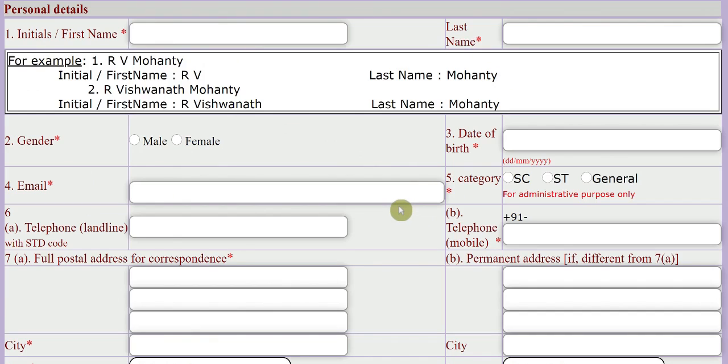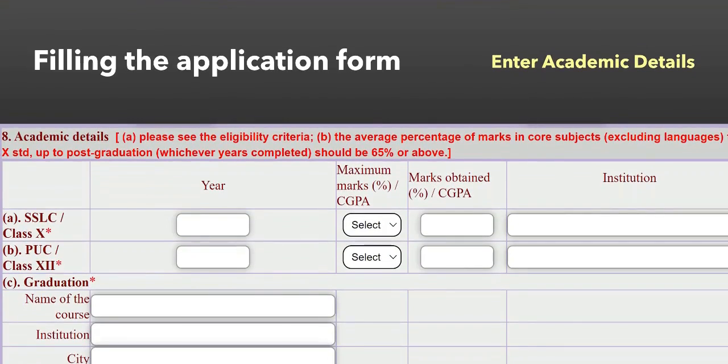From here, you can enter all the details here, starting from 10th standard onwards. Year of completion of your SSLC or 10th. You have to select the maximum mark or CGPA by selecting it here. And marks obtained either in percentage or CGPA where you studied your SSLC or plus 2 here.